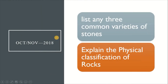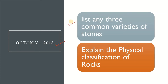After March-April 2018, the next paper is October 2018. The short answer question is: list 3 common varieties of stones. The answers are granite, marble, limestone, and sandstone — you can select any 3 of these varieties.